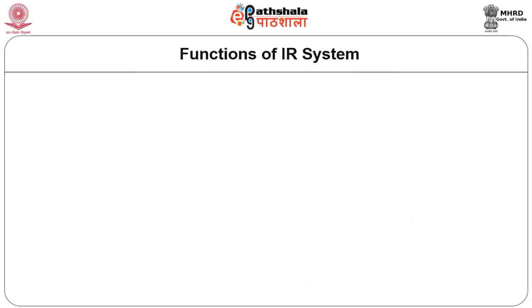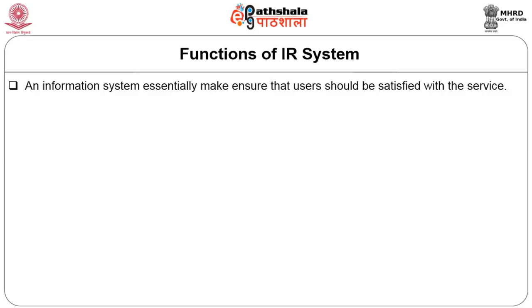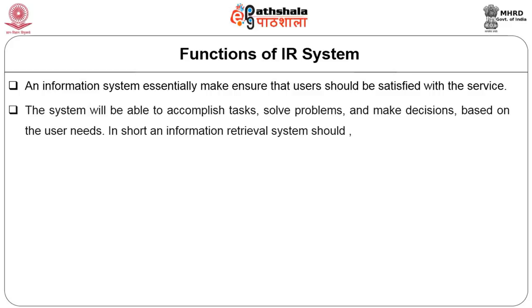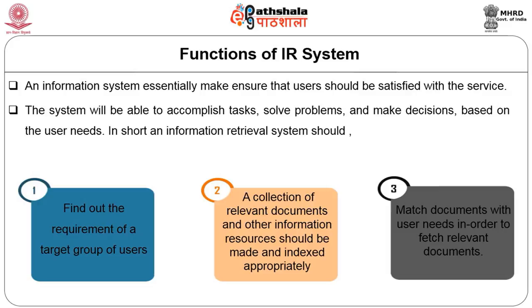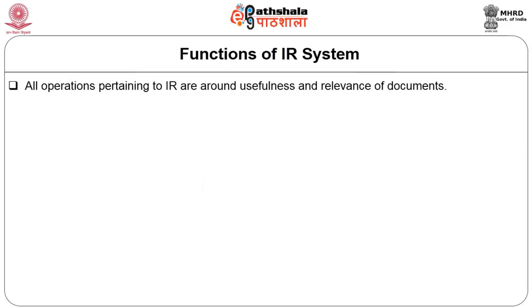Coming to the functions of an IR system: an IR system essentially ensures that users should be satisfied with the service. The system should be able to accomplish tasks, solve problems and make decisions based on user needs. In short, an information retrieval system should find out the requirements of the target group of users, find a collection of relevant documents and other information sources, index them appropriately, and then match the documents with user needs in order to retrieve relevant documents. The operations pertaining to IR are around usefulness and relevance of documents.